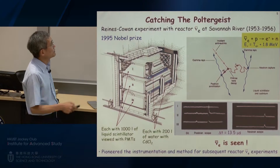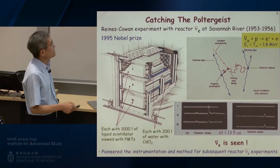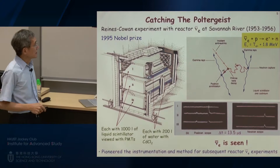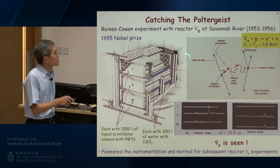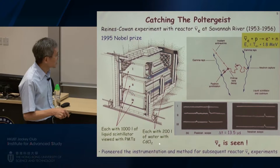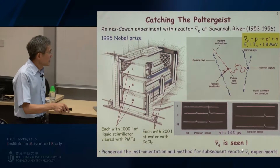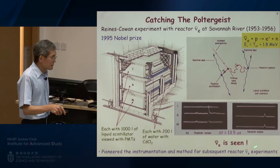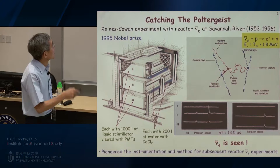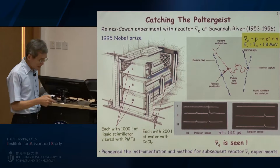Throughout a few years, these two gentlemen discovered the antineutrino. More importantly, this pioneer experiment also provided the techniques that nowadays we still continue to use in nuclear reactor neutrino experiments. Talking about Nobel Prizes, Professor Reines received the prize in 1995 — it was long overdue.